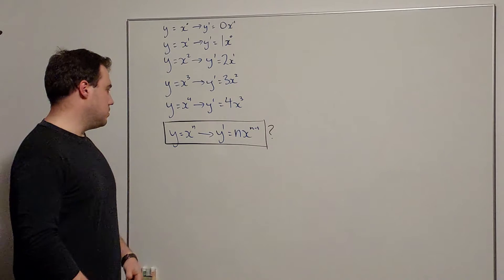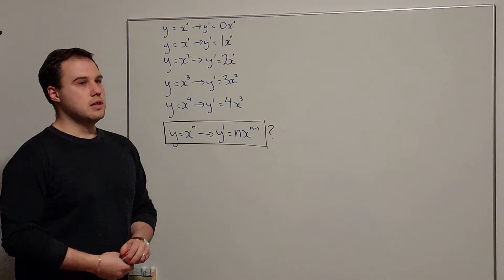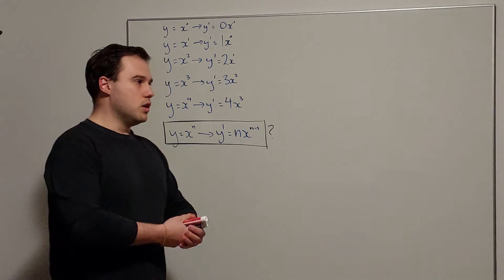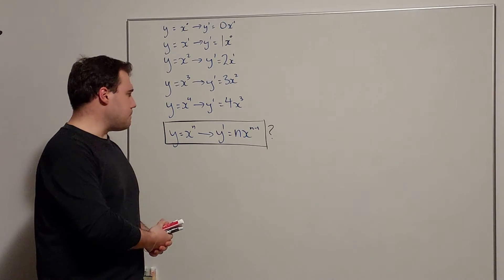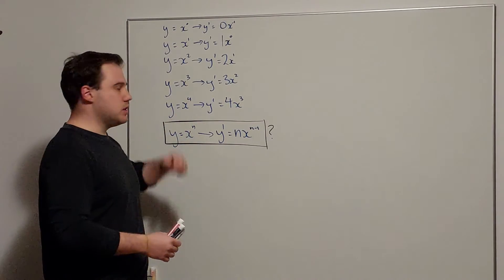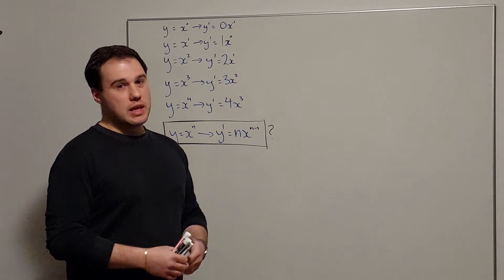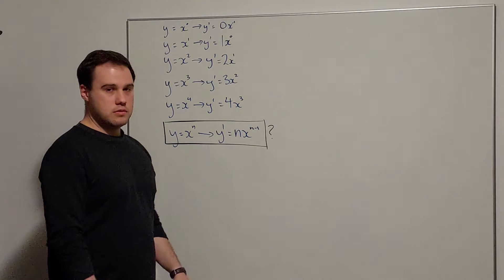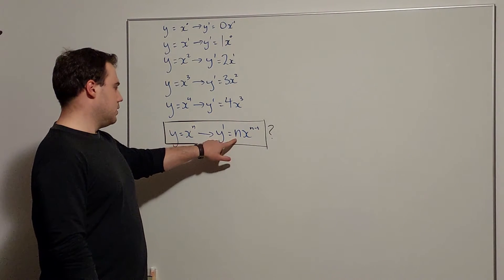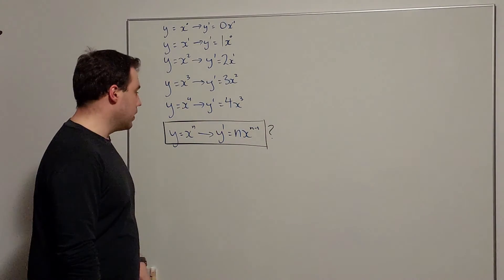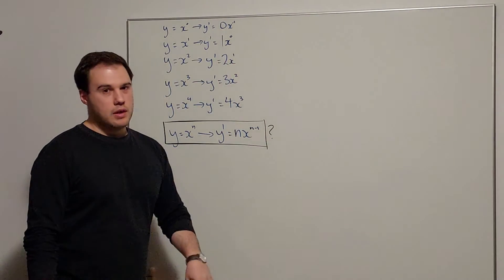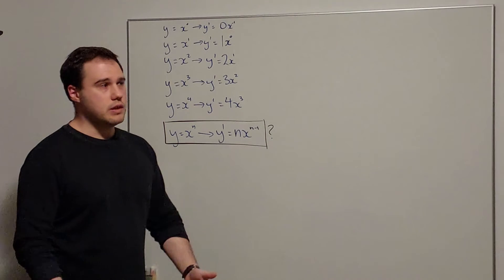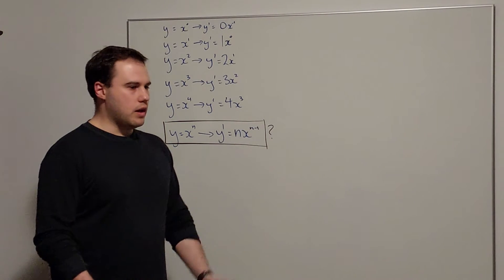One good way to check if this pattern has predictive power would be to try a new number — like x to the power of 5, differentiate by first principles, and see if we get 5x to the 4. But that algebra would be the same as before. So maybe: what other types of numbers are there that we could put in here? So far these are all non-negative integers. Why don't we extend this and see if it works for negatives as well?